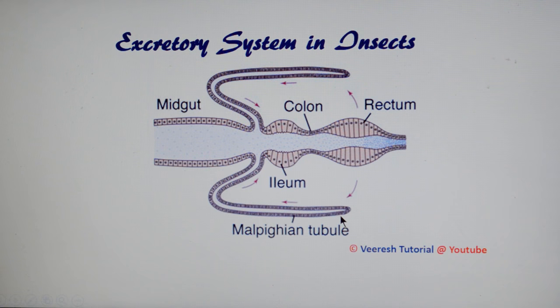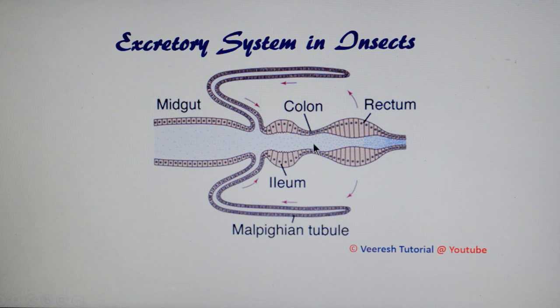Excretory system in insects. Excretion is the unselective removal of substances from the hemolymph, which forms the primary urine in the Malpighian tubules. Selective modification of the primary urine takes place by reabsorbing useful compounds in the Malpighian tubules and also in the rectum. The excretory system is mainly involved in maintaining ionic and water balance in the insect body, as well as elimination of nitrogenous waste material.